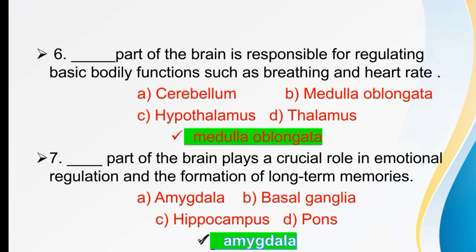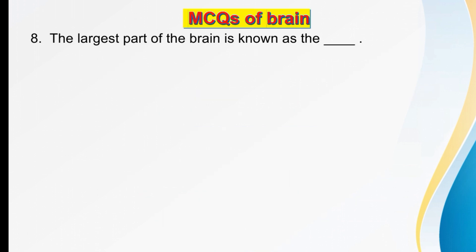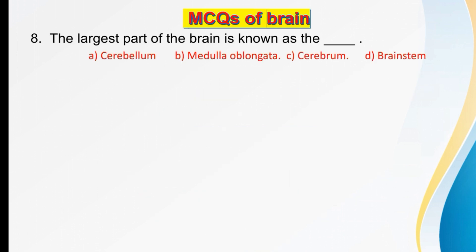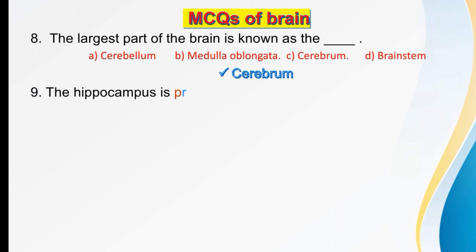The largest part of the brain is known as dash. Options are cerebrum, medulla oblongata, cerebellum, or brainstem. The right answer is cerebrum — it is the largest part of the brain.